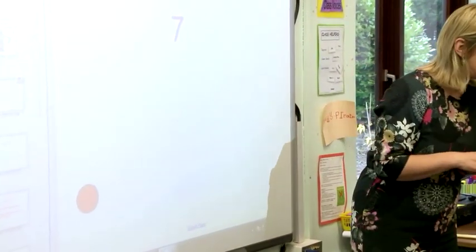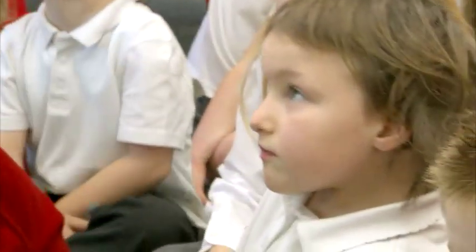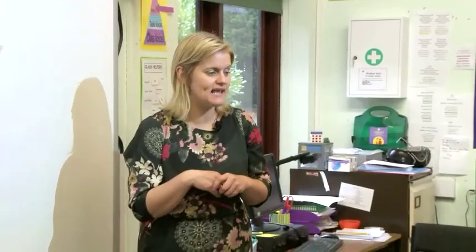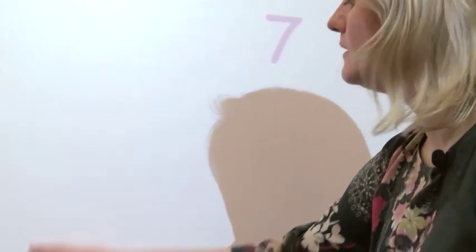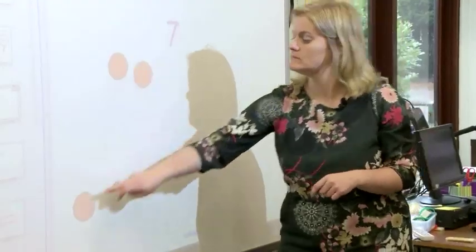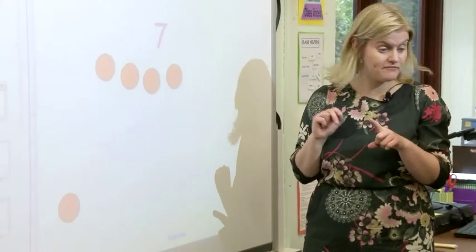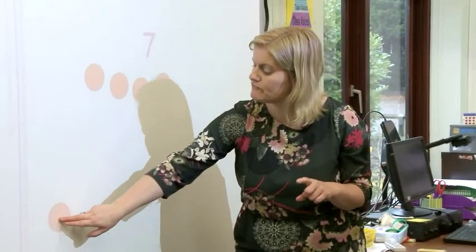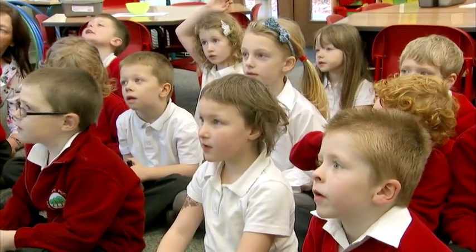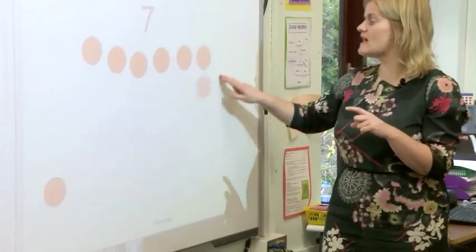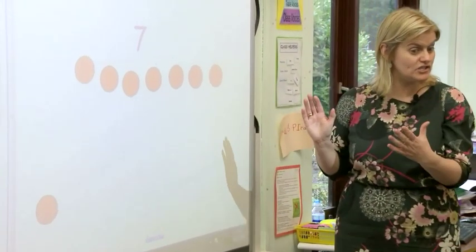How could I partition the number 7? How many counters do I need to get? 7. Right, count with me. 1, 2, 3, 4, 5, 6, 7. So I've got 7 counters. Now if I'm partitioning them, what did Adam say partitioning was again? It's when you can split the number up.